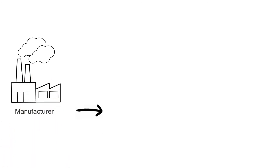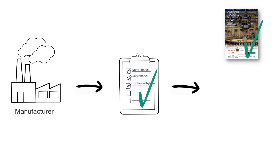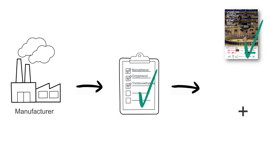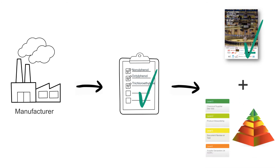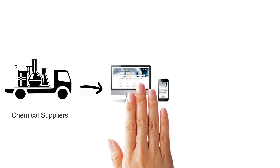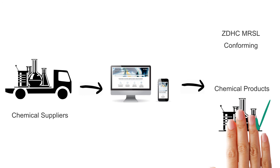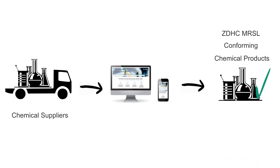What the manufacturers need is an easy-to-use list of chemical formulations that meet the requirements of the ZDHC MRSL in accordance with the conformance levels, while what the chemical suppliers need is a platform to showcase their ZDHC MRSL conforming chemical products to the manufacturers.